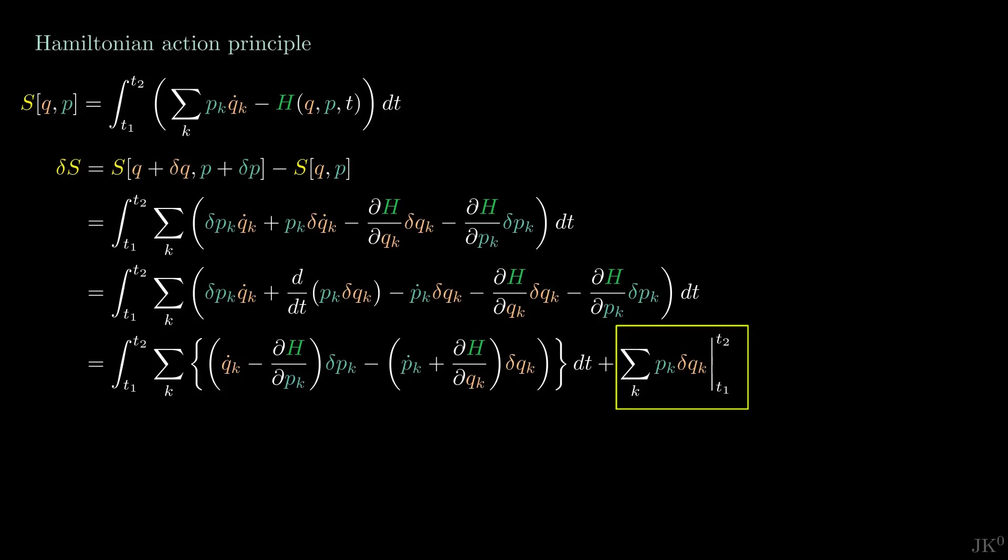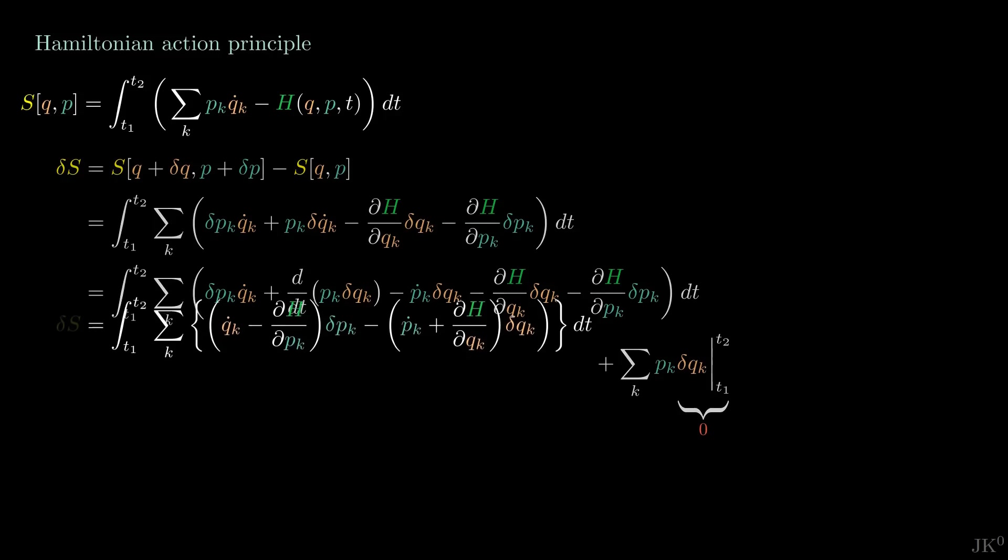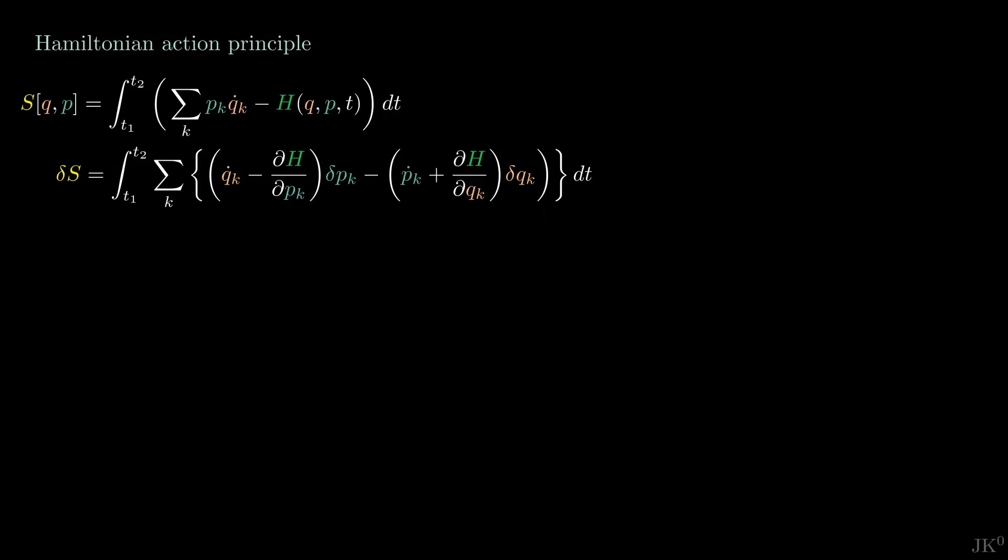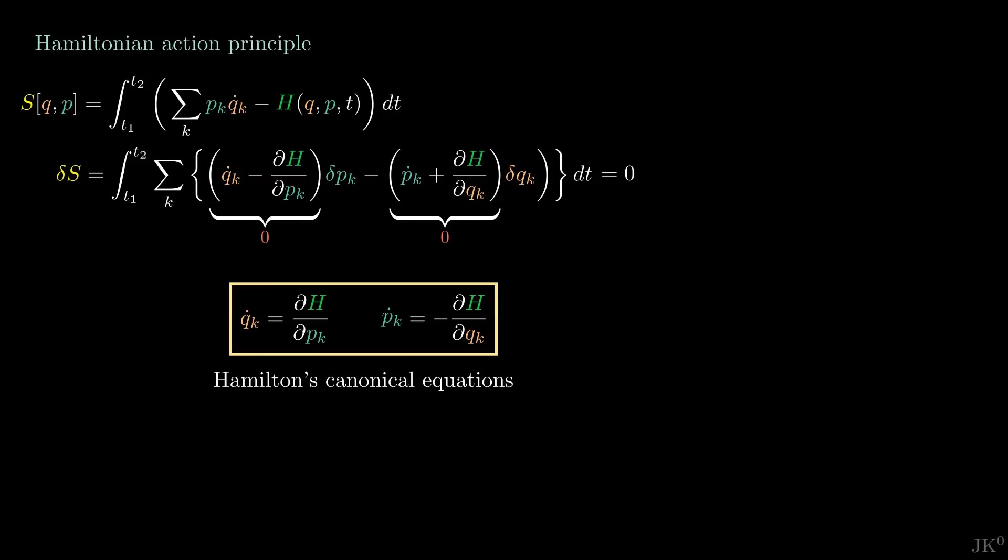In this term out of the integral, we get the factor delta q evaluated at the end points, which you might remember from the video on Lagrangian mechanics is identically zero. So this last term vanishes. We are left with this expression for the variation of the action, which we make stationary by setting all this to zero. Just like the derivation of the Euler-Lagrange equation, here we use that the variations delta p and delta q are arbitrary. Therefore, the only way for all this integral to vanish is that the two parentheses are simultaneously zero. And from here, we obtain the so-called Hamilton's canonical equations.